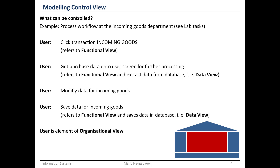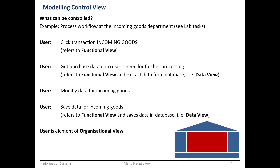You activate the transaction 'incoming goods' when working at the incoming goods workstation. The first step is to retrieve the purchase order data — the amount and the product which was ordered — displayed on your screen. You then check your incoming goods against the purchase order: the ID, the type of product, and the number of products.